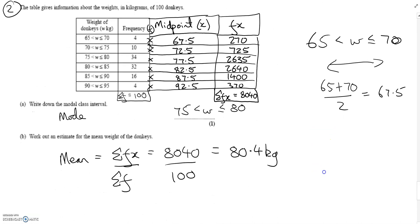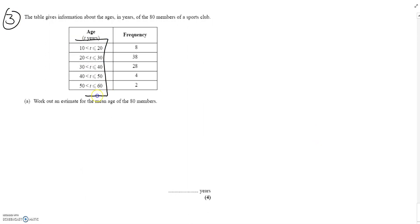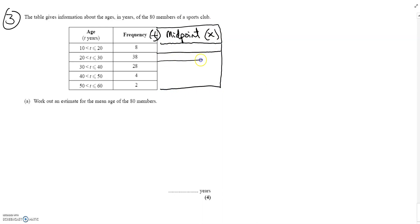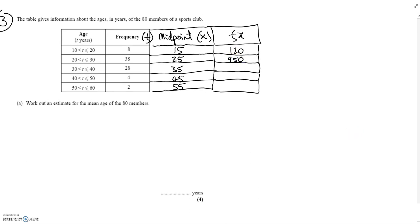Feel free to pause the video at particular stages to write things down. Question three follows the same idea as question two — we have a range of values, so we need the midpoint column x and the fx column. The frequency column is f. The midpoint between 10 and 20 is 15, then 25, 35, 45, 55. Multiplying along: 15 times 8 is 120; 25 times 38 is 950; 35 times 28 is 980; 45 times 4 is 180; 2 times 55 is 110.